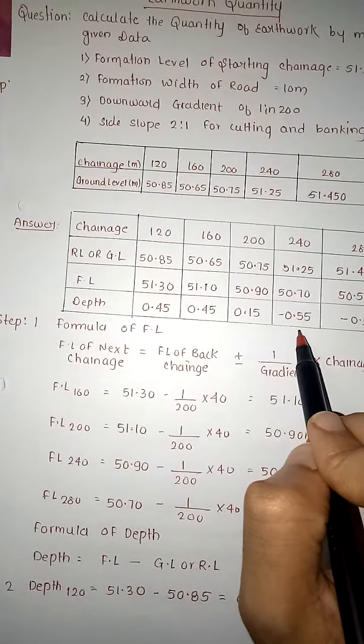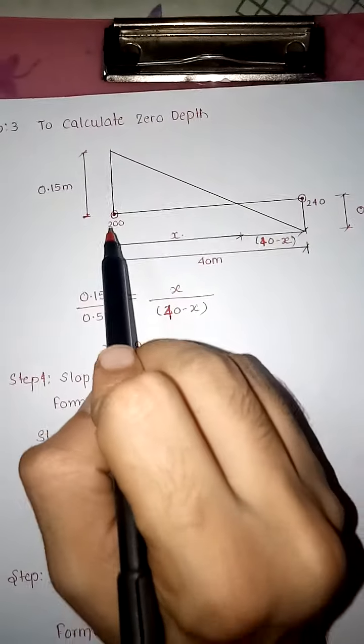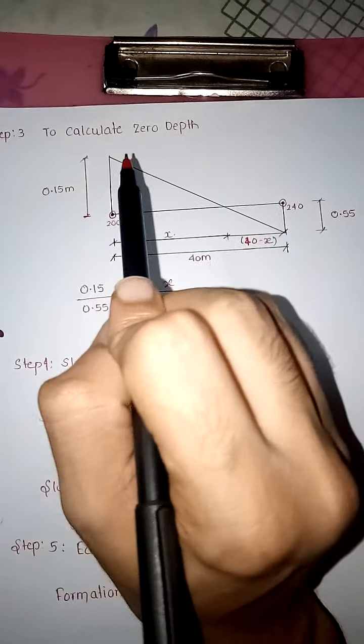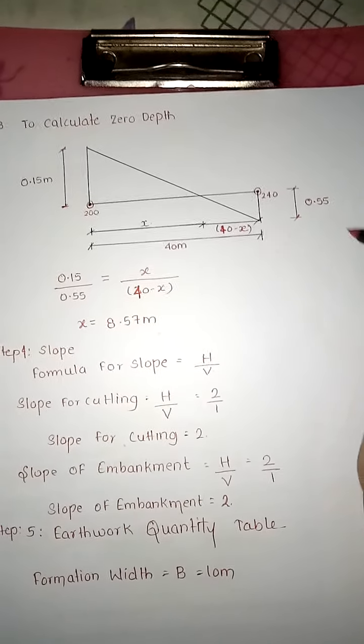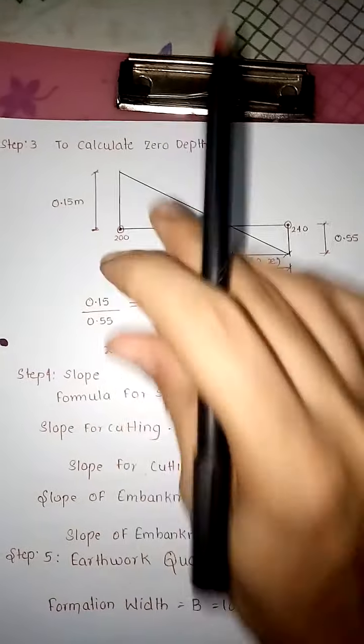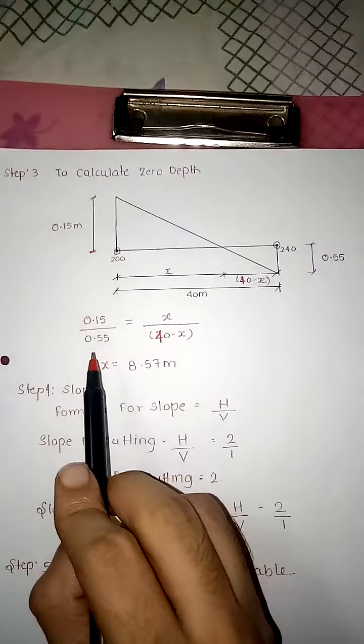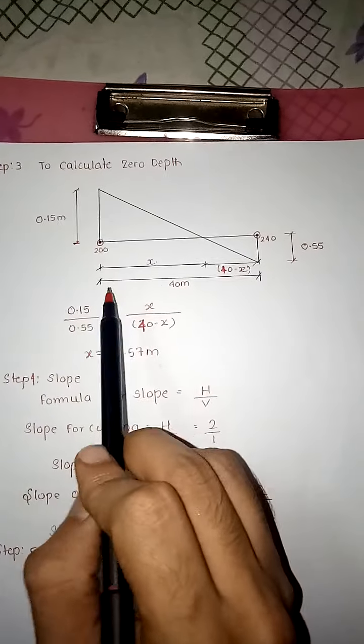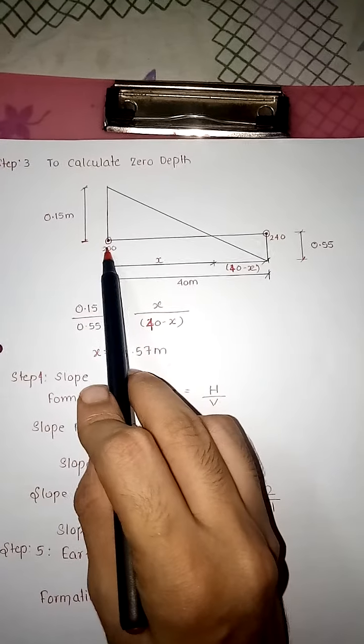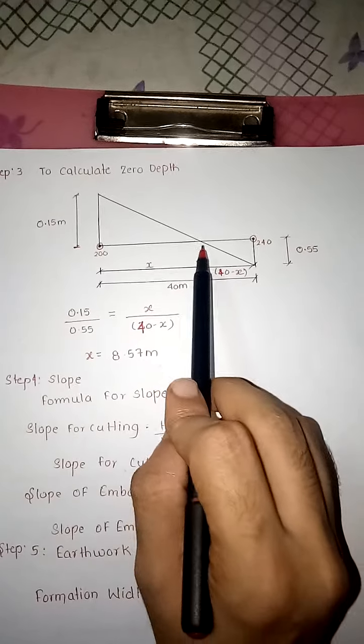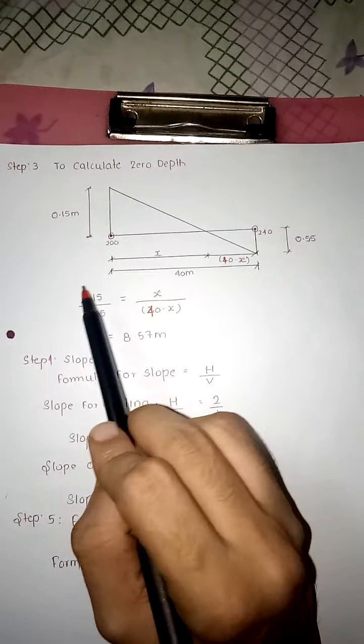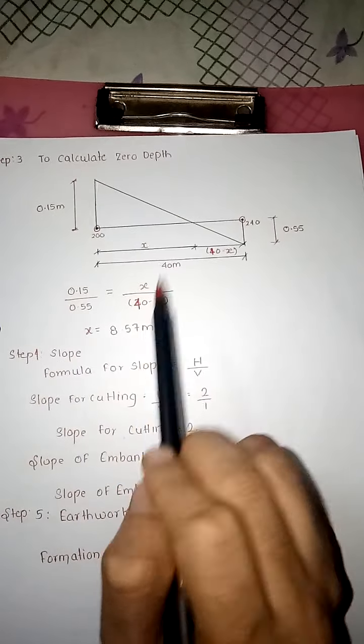At 200, depth is 0.15, and at 240 it's minus 0.25. We make a baseline from 200 to where depth increases 0.15 and decreases 0.55. We need to find this distance x, and from there to 240 will be 40-x. After calculation, x value comes as 8.57 meter.